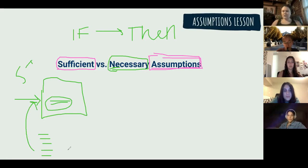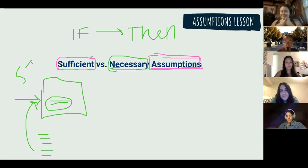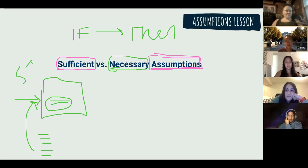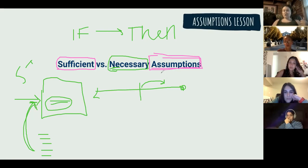On strengthening questions, do we want strong or mild answers? Strong. So what about sufficient? Strong — excellent. The way I remember it: sufficient, strength, and stronger all start with S. Sufficient brings in new information, and on strengthening questions we have our conclusion and we try to bring in new information that gets us closer to proving it. On sufficient assumption questions, we want to bring in something so strong that it guarantees the conclusion.